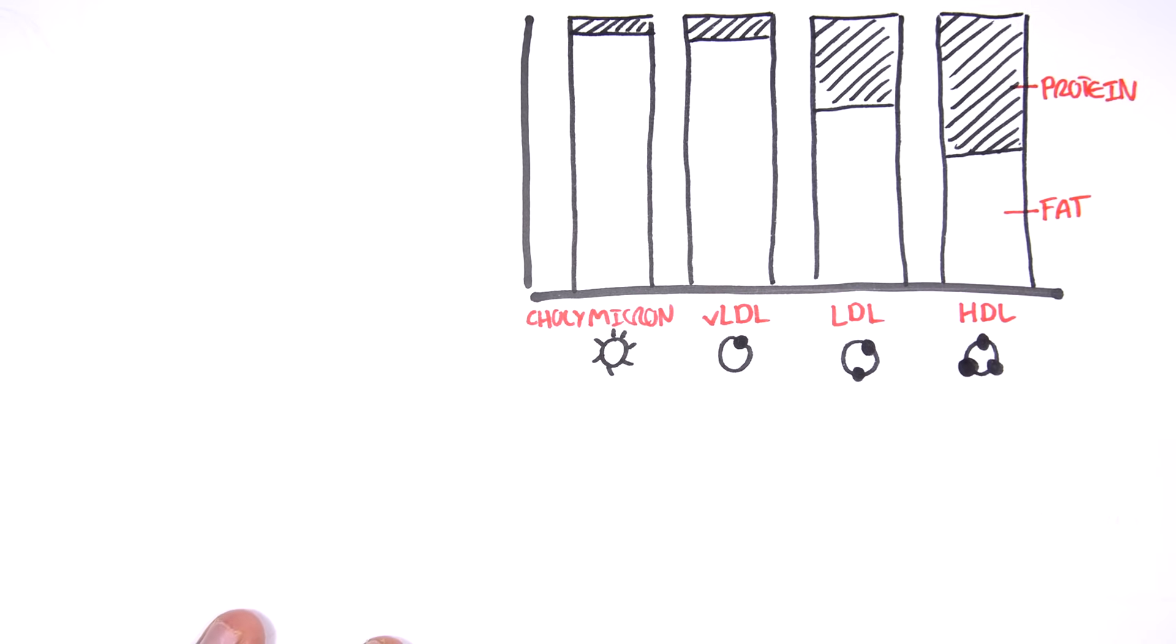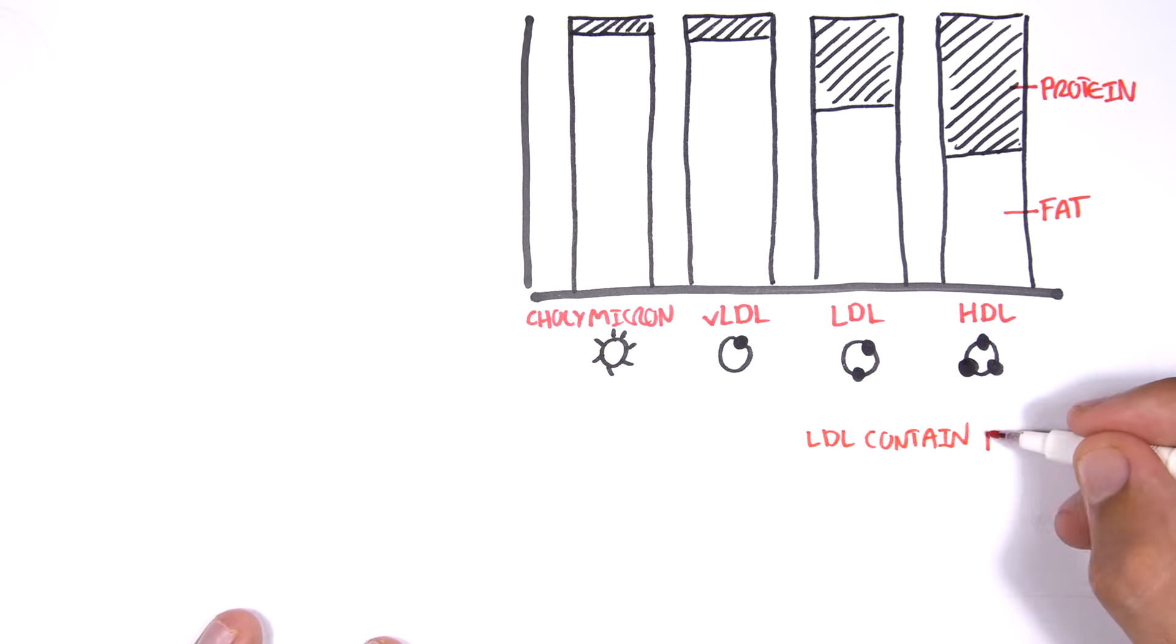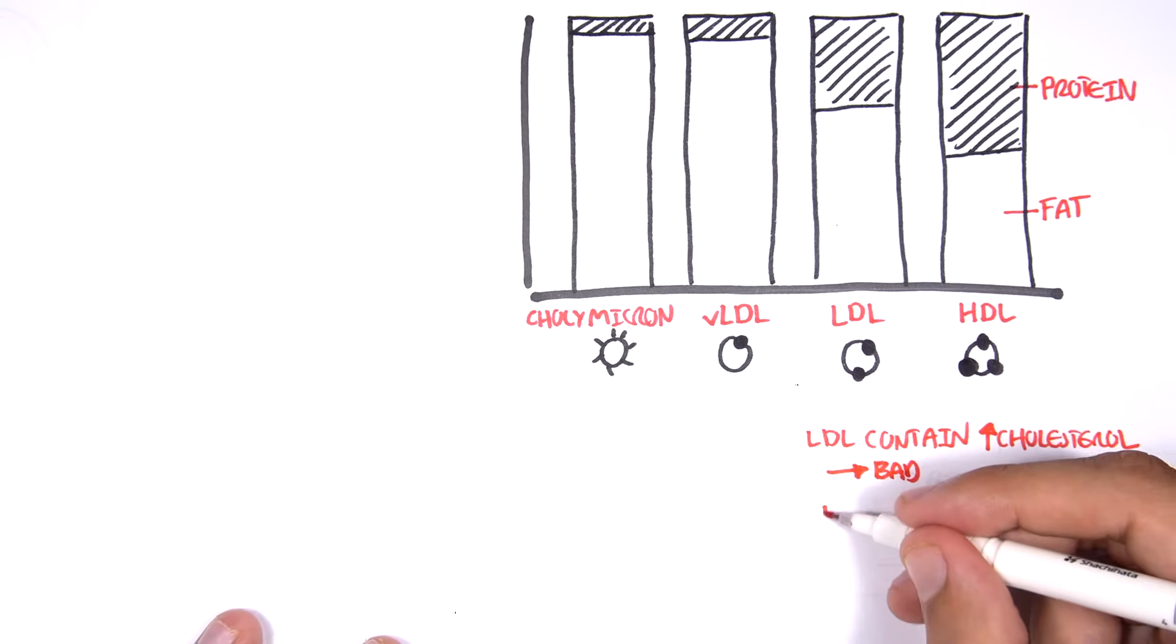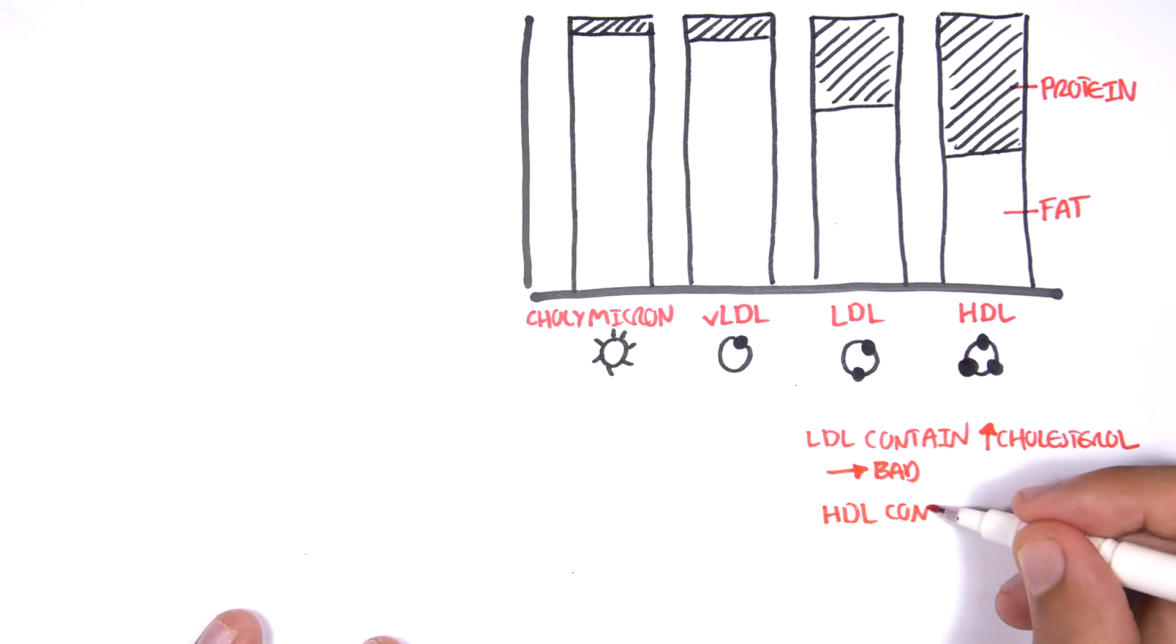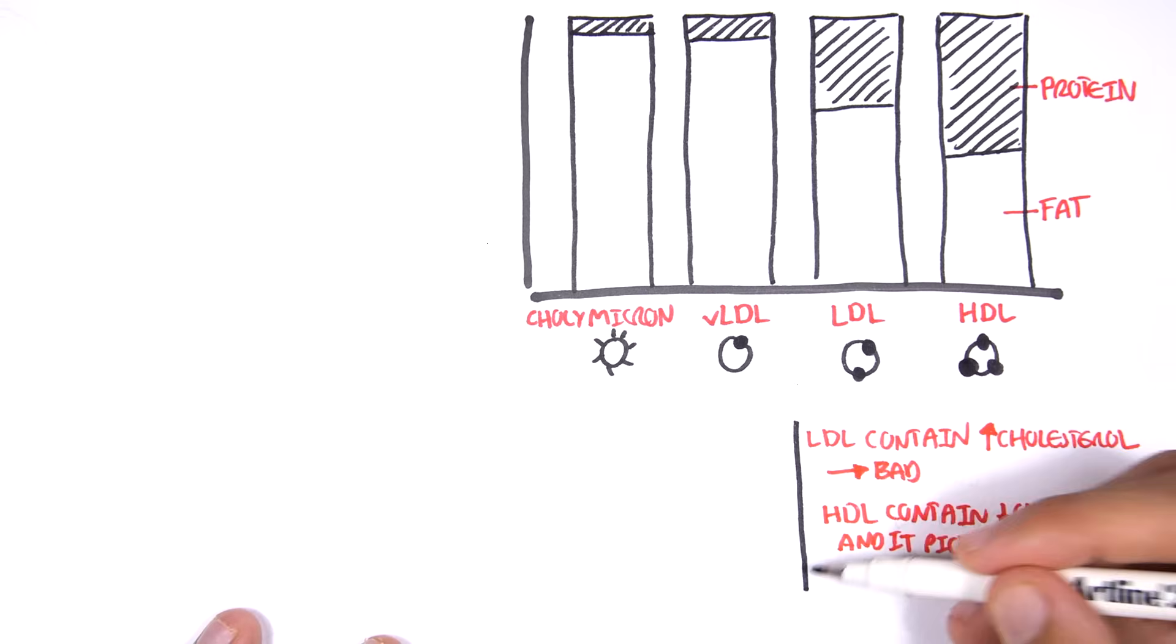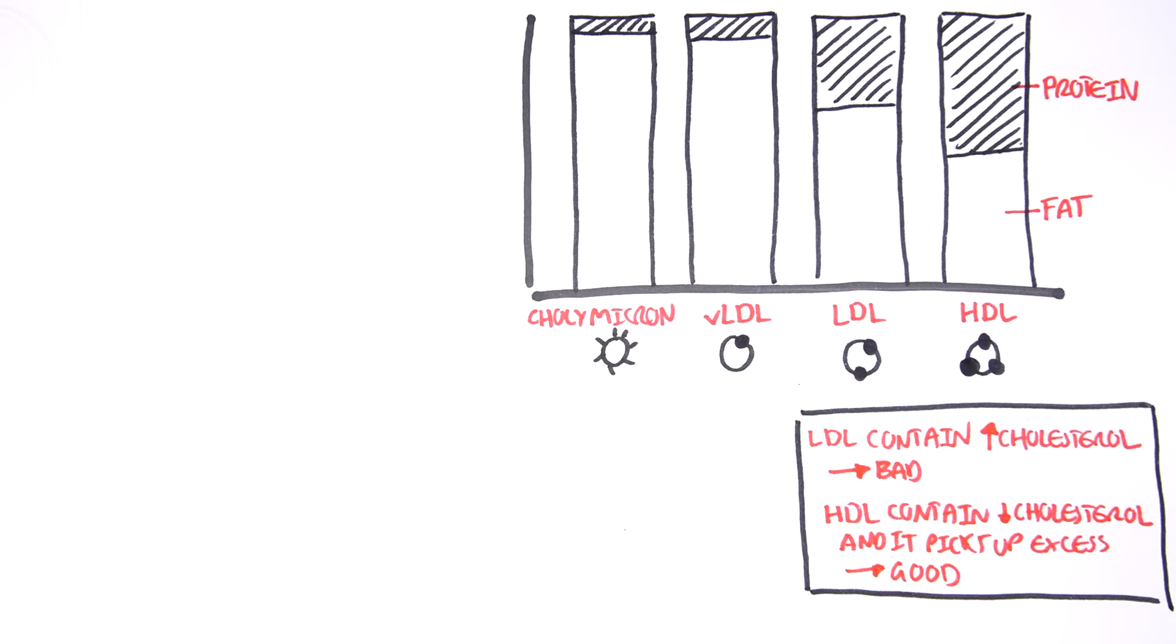It is important to understand the different protein-to-lipid ratio in each of these lipoproteins because it relates to their function. For example, LDL contains a lot of lipids that are cholesterol. We say this is bad because if we have a lot of LDLs, it means that we have a lot of cholesterol, which is not good. HDL contains less cholesterol and is responsible for picking up excess cholesterol from tissue and bringing it back to the liver. So we say HDL is good.